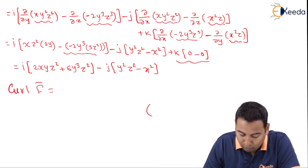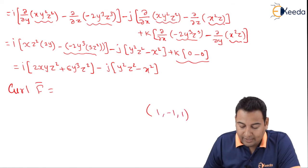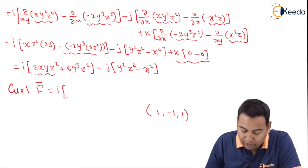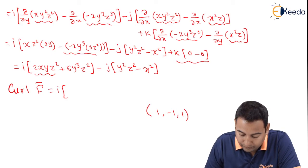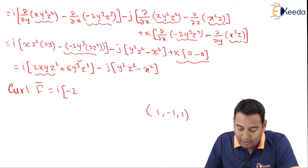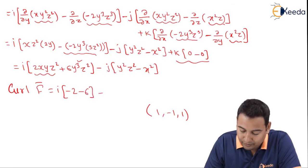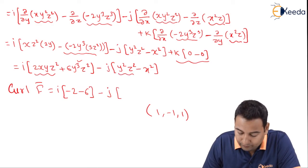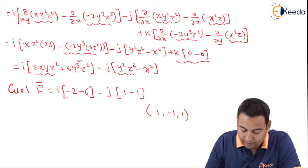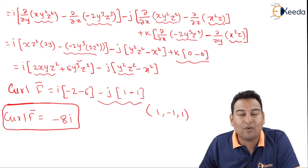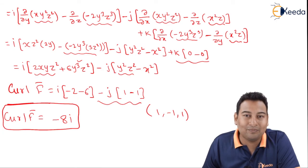Now let's evaluate curl of f̄ at point (1, −1, 1). For the i component: substituting x=1, y=−1, z=1 gives 2(1)(−1)(1) + 6(−1)³(1)² = −2 − 6 = −8. For the j component: y²z² − x² = 1 − 1 = 0, so −j(0) = 0. Curl of f̄ = −8i. In the problem, it was asked to find both divergence and curl, and we found both. Divergence = −2, Curl = −8i. Hope you understood, thank you!